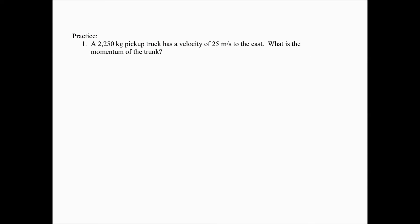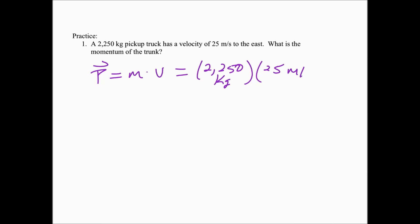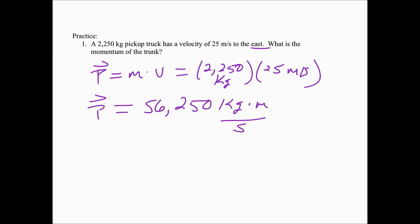Practice question: a 2250-kilogram pickup truck has a velocity of 25 meters per second to the east. What is the momentum of the truck? We know momentum equals mass times velocity: 2250 kilograms times 25 meters per second to the east (positive). That gives 56,250 kg·m/s. With two sig figs, the answer is 56,000 kilogram meters per second.